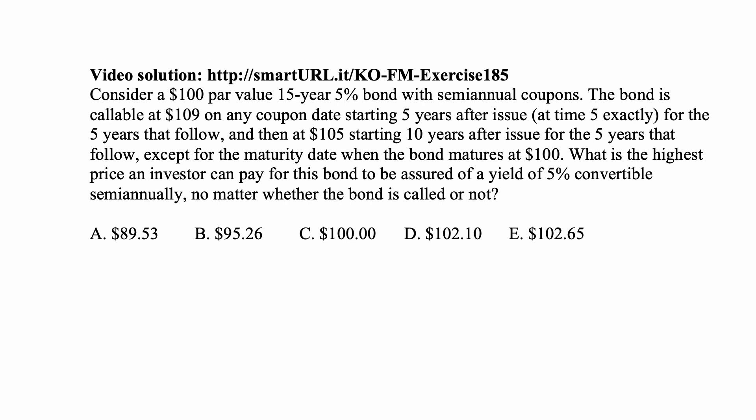Here's the problem for today for exam FM on financial mathematics. Consider a 100 par value 15-year 5% bond with semiannual coupons. The bond is callable at 109 on any coupon date starting 5 years after issue, at time 5 exactly, for the 5 years that follow, and then at 105 starting 10 years after issue for the 5 years that follow, except for the maturity date when the bond matures at 100. What is the highest price an investor can pay for this bond to be assured a yield of 5% convertible semi-annually, no matter whether the bond is called or not?